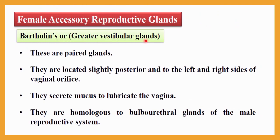Bartholin's gland, also called the greater vestibular gland, is a paired gland located slightly posterior and to the left and right sides of the vaginal orifice. Their main purpose is to secrete mucus to lubricate the vagina. They are homologous to the bulbourethral gland present in the male reproductive system.